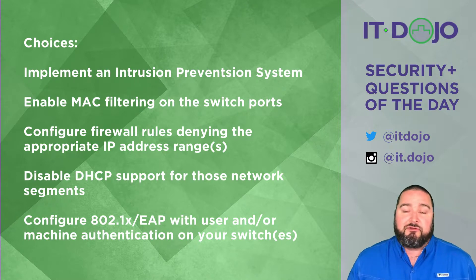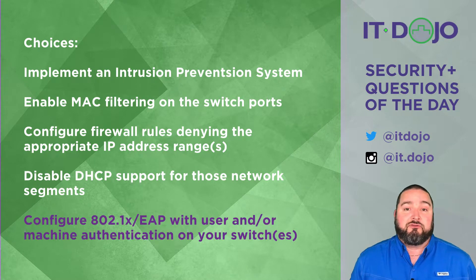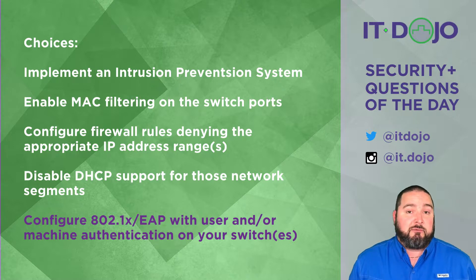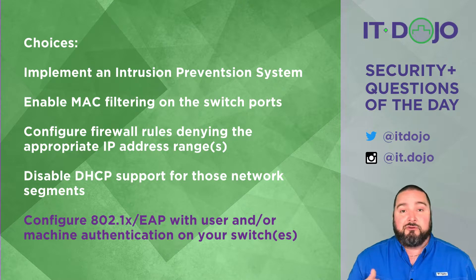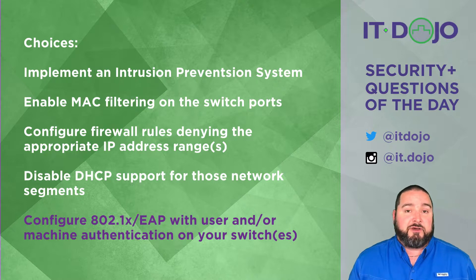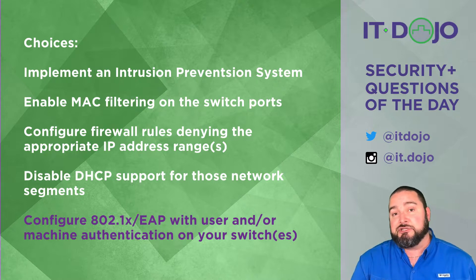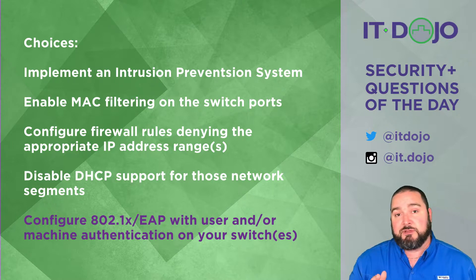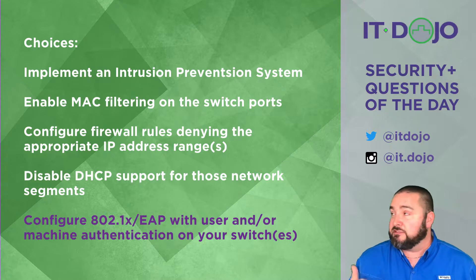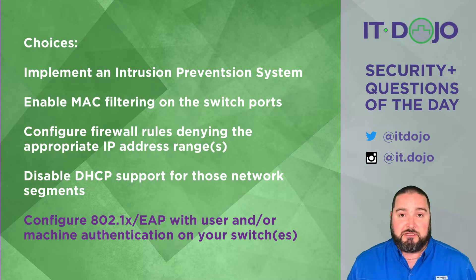Finally, we come to the right answer: go in on the switch that this wall jack leads to and enable 802.1x authentication — or 802.1x with the AP — then configure user and/or machine authentication for the devices that plug into that. This is going to allow legitimate devices on your network to connect while preventing illegitimate devices — those people renting the conference room — from being able to get onto your network. That is the best solution of the choices presented.